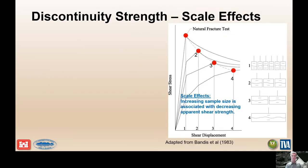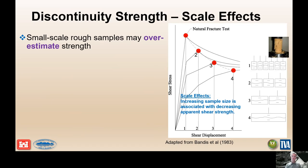Discontinuity shear strength is important because we have to exceed the shear strength on a block or discontinuity for it to displace and move. But shear strength is tricky to measure, mostly because we get small cores that are at a relatively small scale compared to the size of the block being evaluated. Barton and Bandis tested large-scale blocks and then broke them into sequentially smaller pieces, finding that the smaller samples resulted in higher shear strength — indicating scale effects.